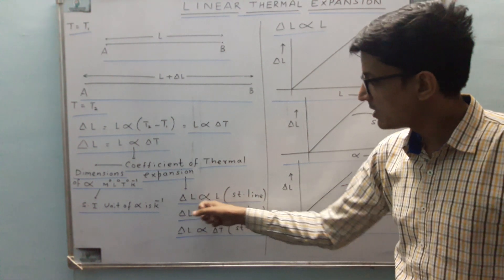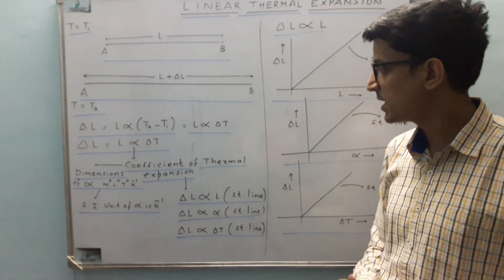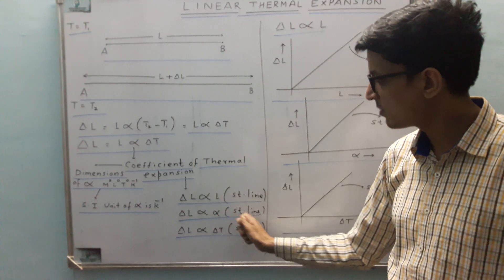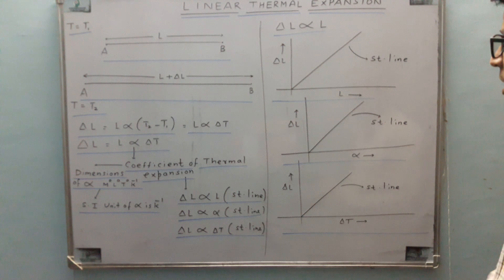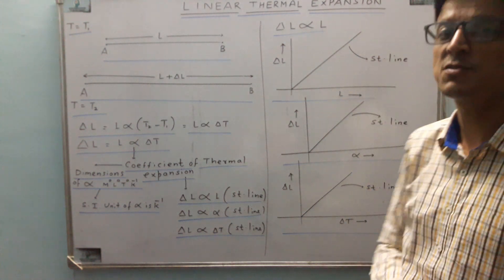So we can see that delta L is proportional to L. So graph will be a straight line. Delta L is proportional to alpha, straight line. Delta L is proportional to delta T, straight line. So if we see the graphs, all the graphs will be straight lines passing through the origin.